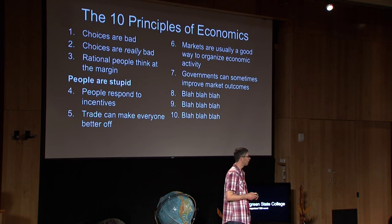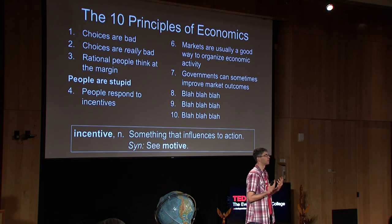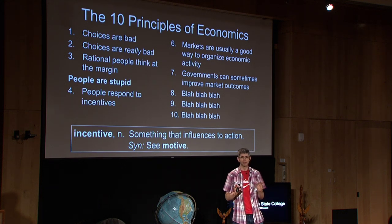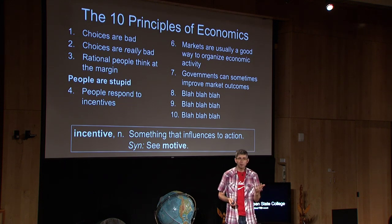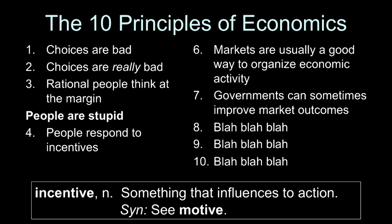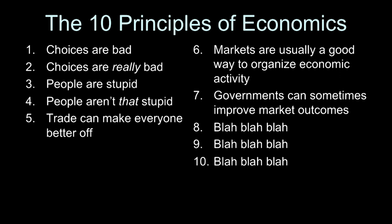But before you despair for humanity, take a look at the next principle: people respond to incentives. The dictionary says that incentive is a noun — a synonym for motive. So when Mankiw says that people respond to incentives, what he's saying is that people are motivated by motives. You might think this is a bit like saying that tautologies are tautological. I mean, people would have to be pretty stupid to be unmotivated by motives. But remember principle three — people are stupid. Hence the need for principle four to tell us that people aren't that stupid. Simplifying again, move on to free trade. Principle five: trade can make everyone better off. Translation: trade can make everyone worse off.